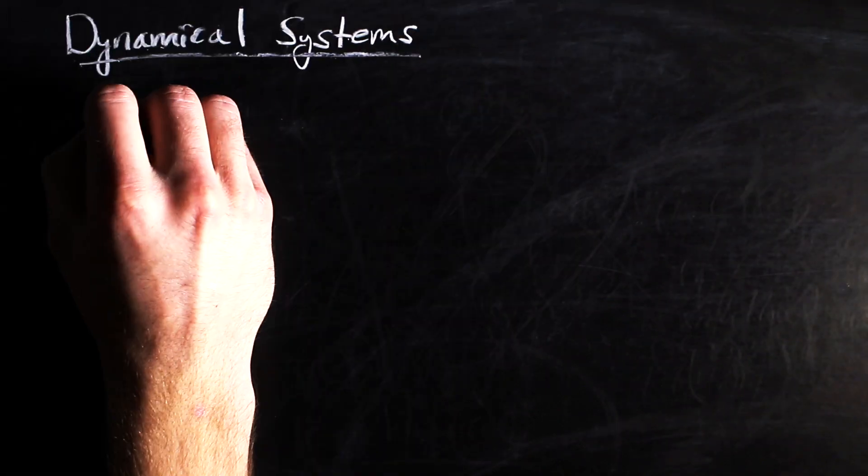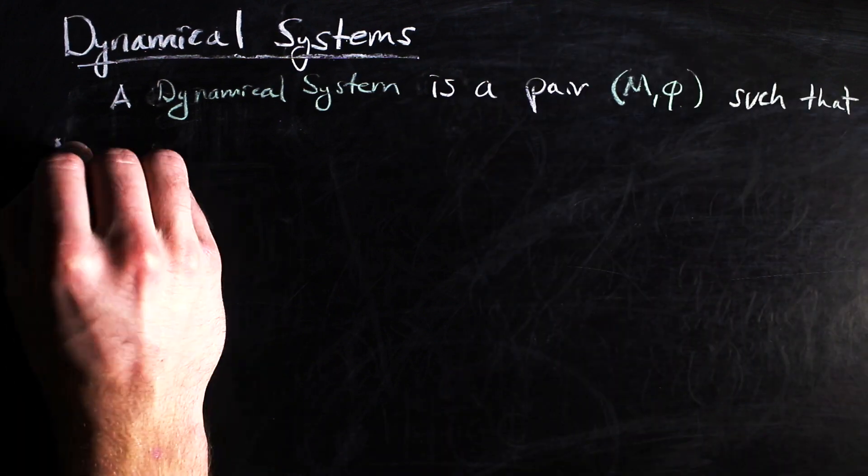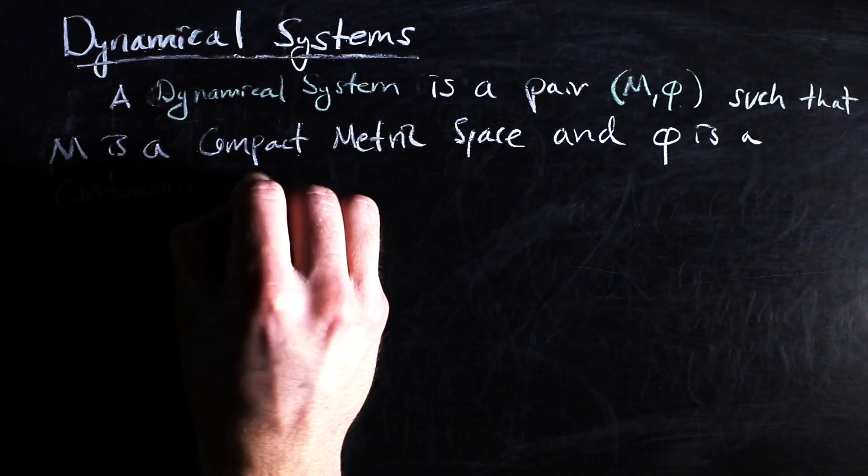In mathematics, a dynamical system is a pair (M, φ), where M is a compact metric space and φ is a continuous map from M to itself.